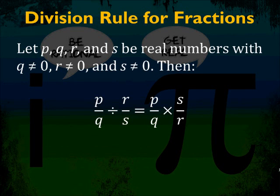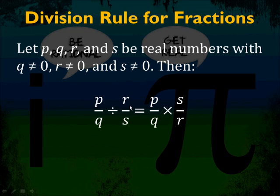The division rule for fractions: if p, q, r, and s are real numbers and q, r, and s are not equal to 0, then p over q divided by r over s equals p over q times s over r. When you divide by a fraction, you multiply by the fraction's reciprocal — divide by r over s, you multiply by s over r. This works the same way using rational expressions.